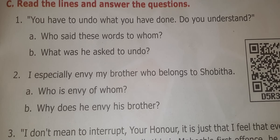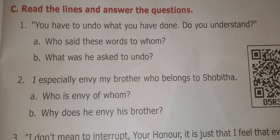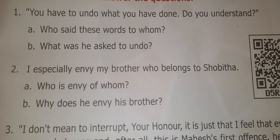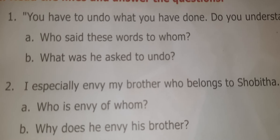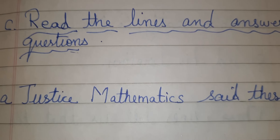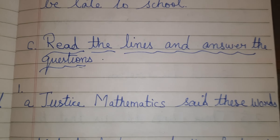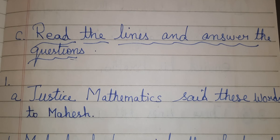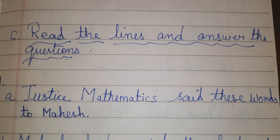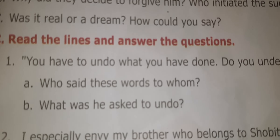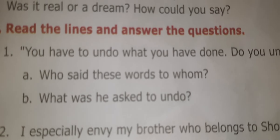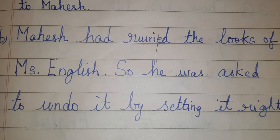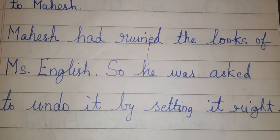Read the lines and answer the questions. First one: A. Who said these words to whom? Justice Mathematics said these words to Mahesh. B. What was he asked to undo? Mahesh had damaged the books of Miss English, so he was asked to undo it by setting it right.